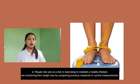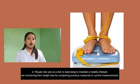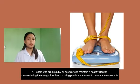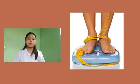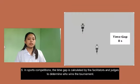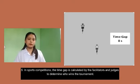Number 4: People who are on a diet or exercising to maintain a healthy lifestyle are monitoring their weight loss by comparing the previous measures to current measurements. Number 5: In sports competitions, the time gap is calculated by the facilitators and judges to determine who wins the tournament.